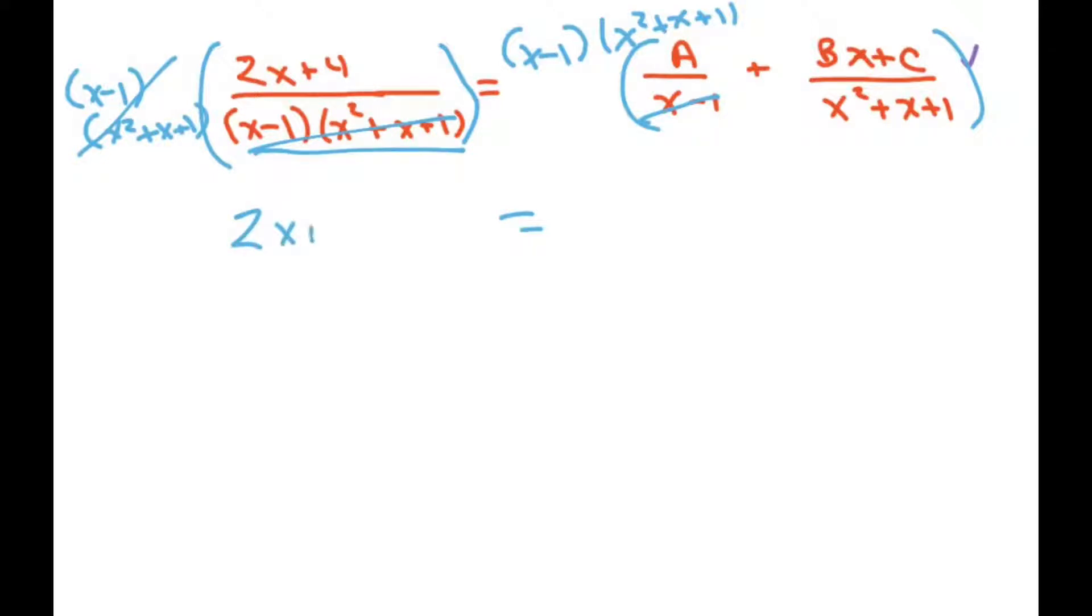And you're left with 2x plus 4. And then we're left with a times x squared plus x plus 1. And then on this, this one here, this is going to cancel. And we're left with bx plus c times x minus 1.